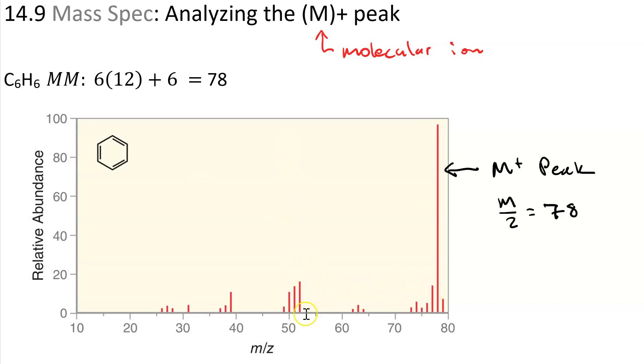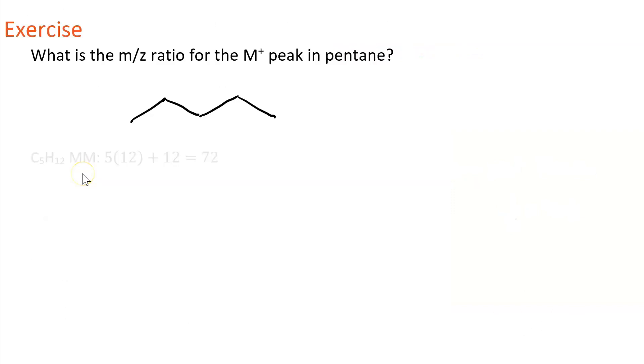Here's an exercise. What's the M over Z ratio for the molecular ion peak in pentane? Here's the bond line structure for pentane: one, two, three, four, five carbons, all single bonds.